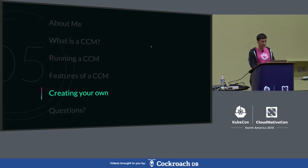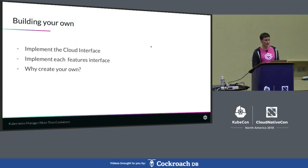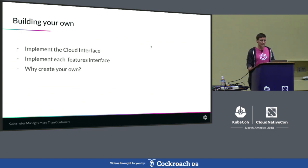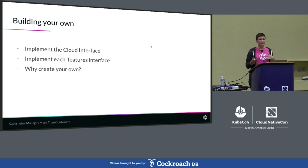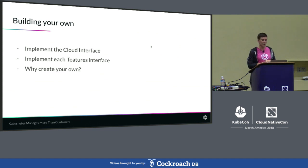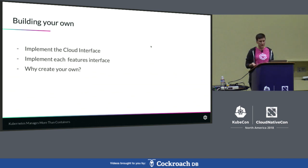So, creating your own. Creating your own CCM is actually pretty simple, mainly because there are already examples out there that are really well documented, and these interfaces are very well split apart as to what each piece is doing, which makes it really easy to understand. You can implement which features you want — there are different features within a CCM and you don't have to implement them all for it to be a CCM. If you don't have load balancing, you don't add that. You can just add the label management type things.